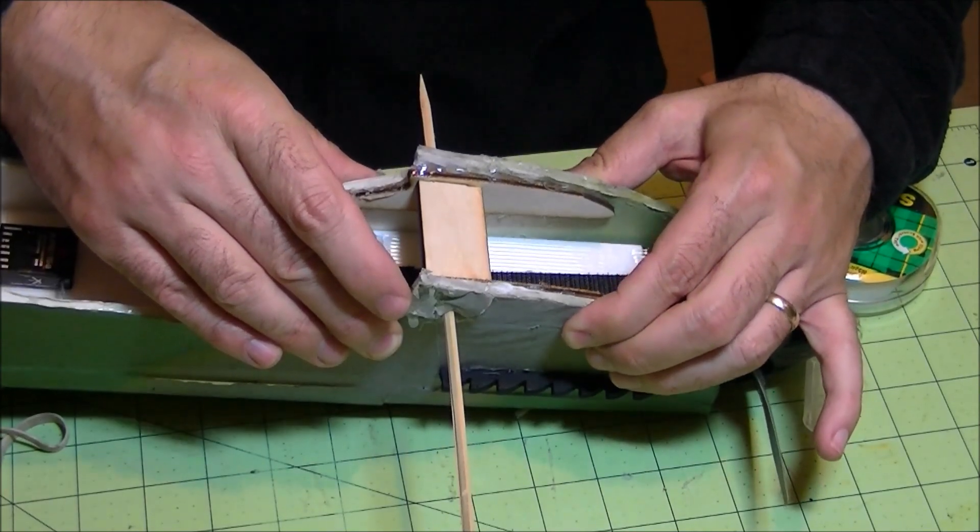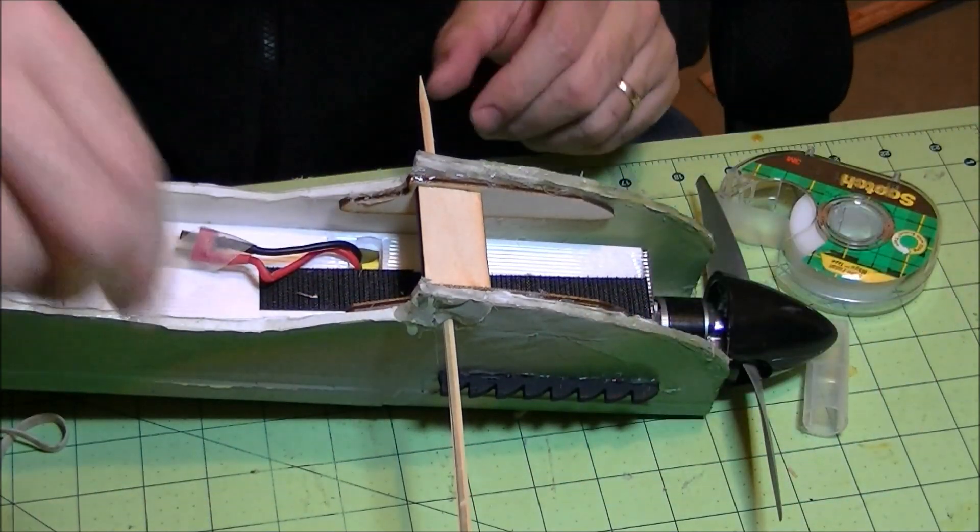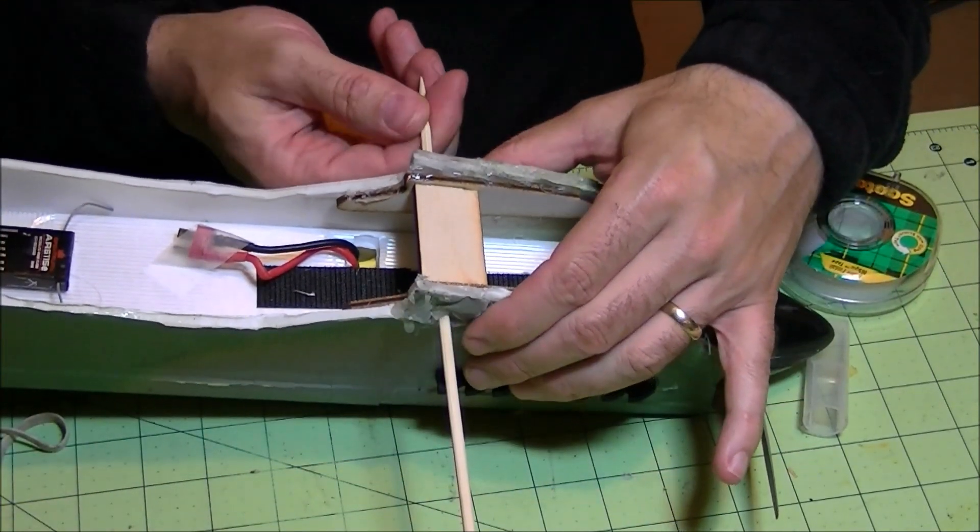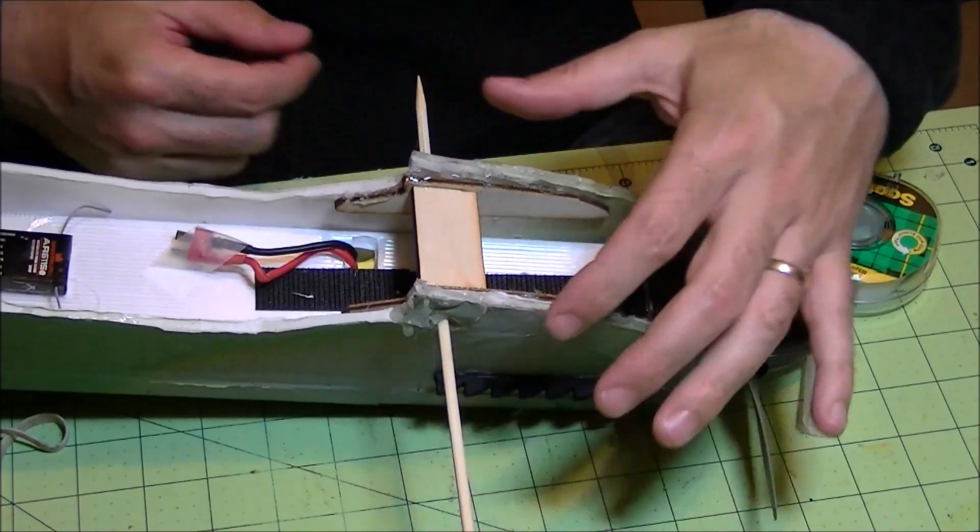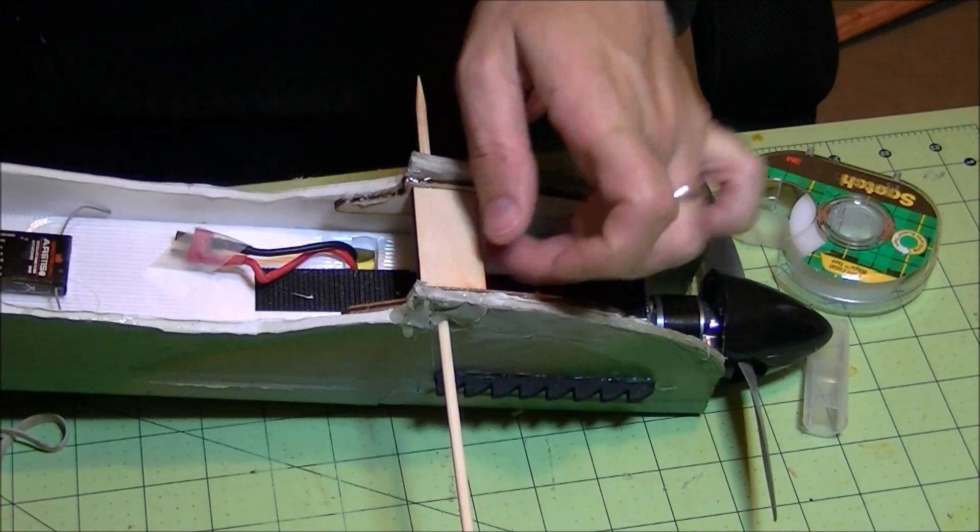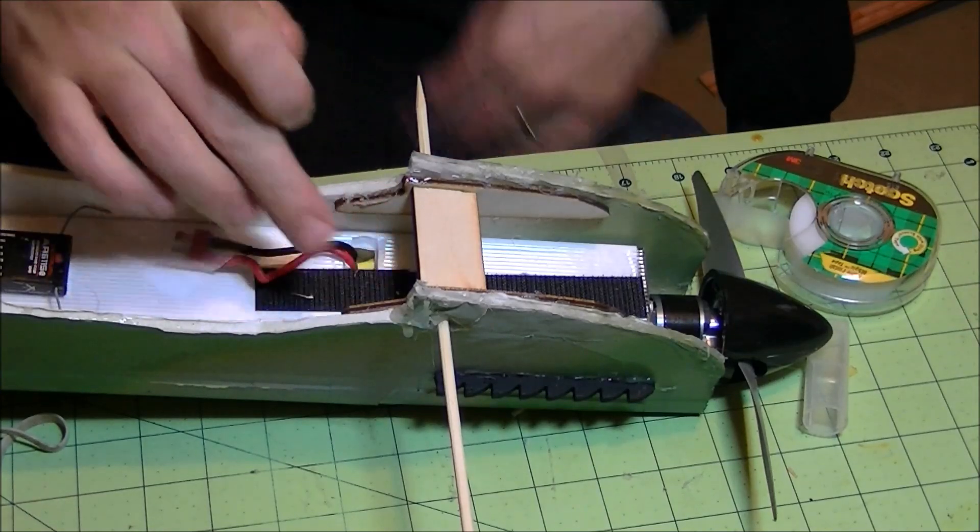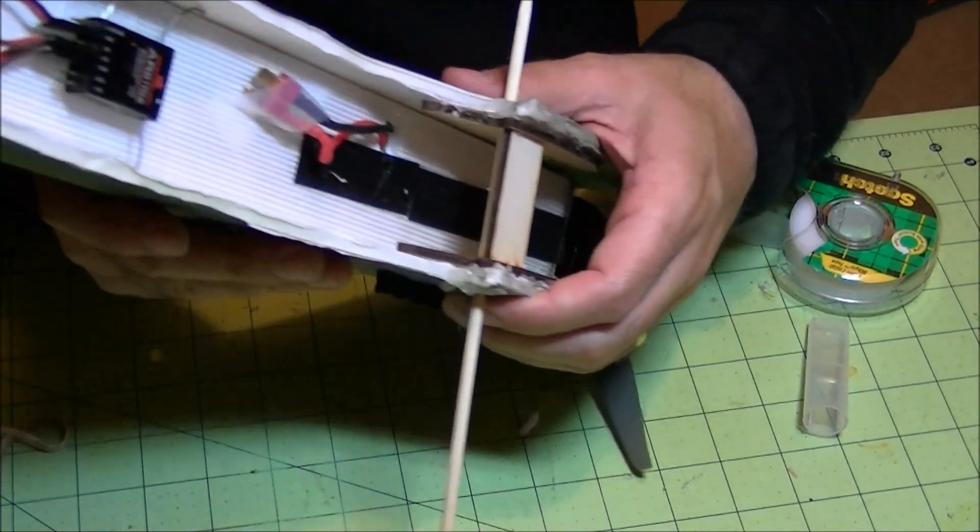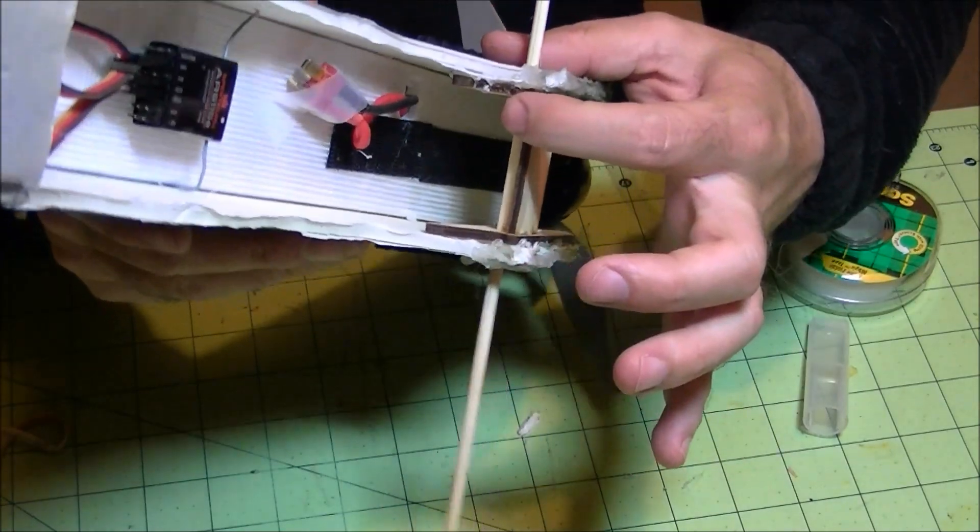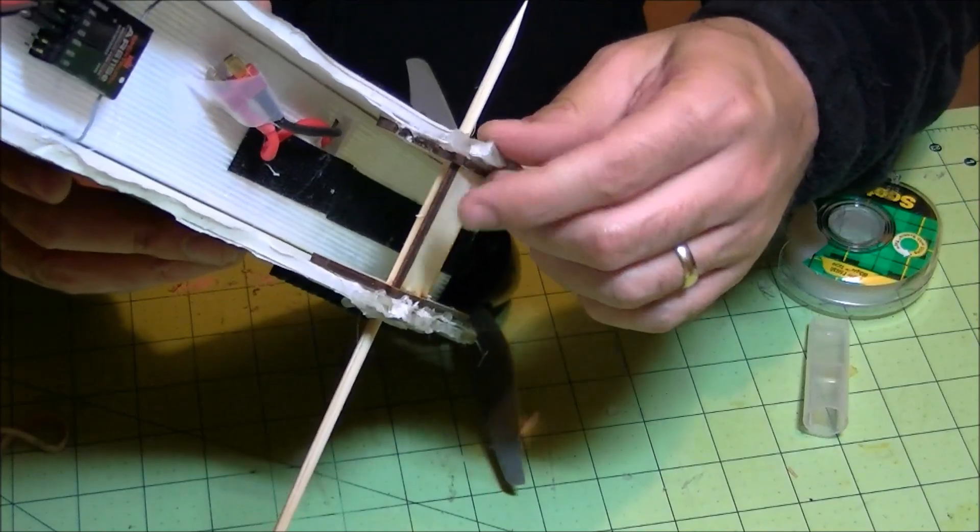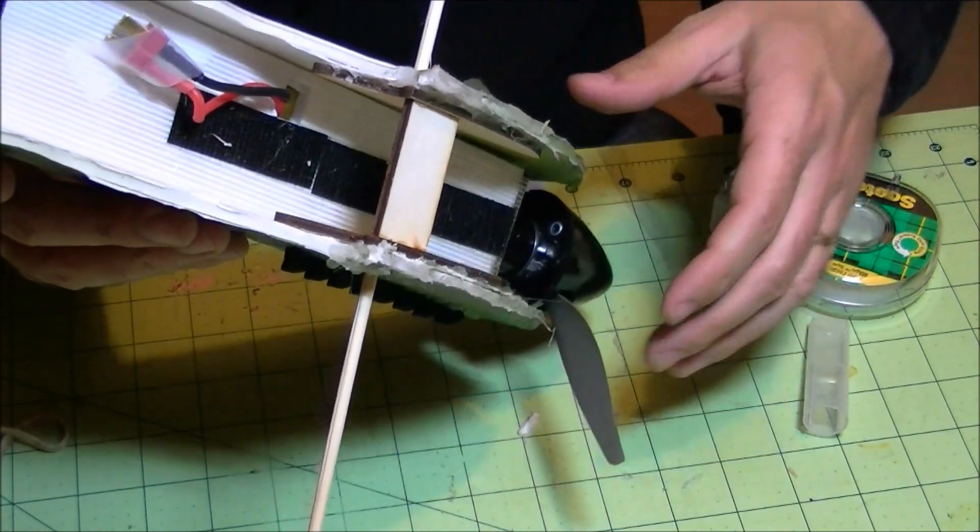And there you go. You've got a wing box that's stronger than stock. You can hot glue in your barbecue skewer or you can put a little CA glue on the inside. And that's typically what I do. I just put a dab of CA glue right in here. It's right where it meets the wood.